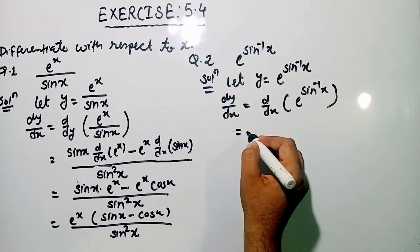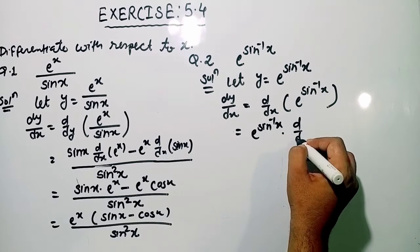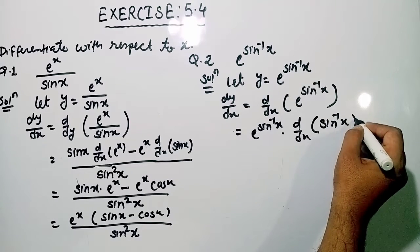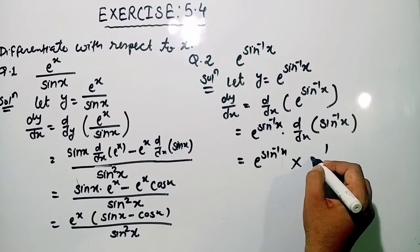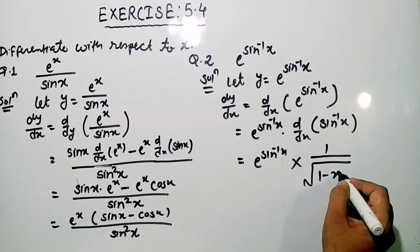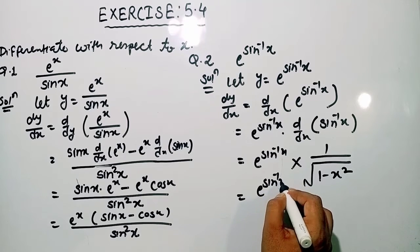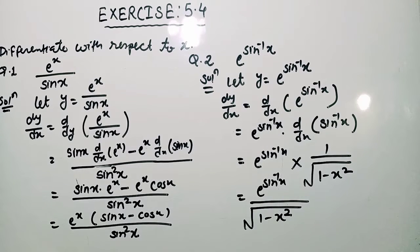Differentiation of e raised to the power sin inverse x will be as it is, then again we will differentiate sin inverse x. So we know that the differentiation of sin inverse x — e raised to the power sin inverse x as it is, differentiation of sin inverse x is equal to 1 upon square root of 1 minus x square. So here we can simply write e raised to the power sin inverse x divided by square root of 1 minus x square. In this way you can find out the differentiation of the function with respect to x.